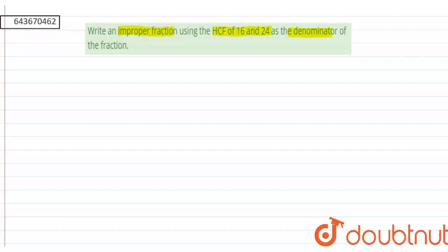So first of all, we need to find the HCF of 16 and 24. We can factorize 16 as 2 into 2 into 2 into 2, and 24 as 2 into 2 into 2 into 3.